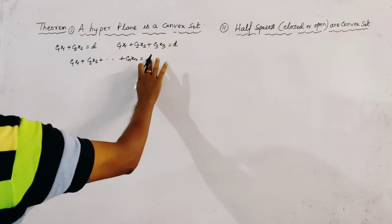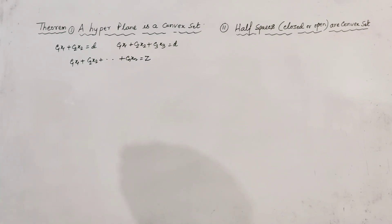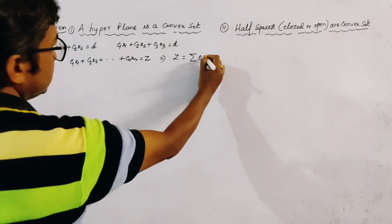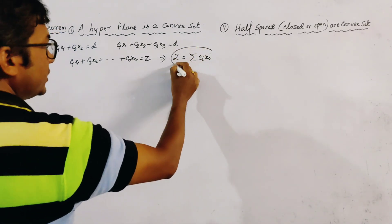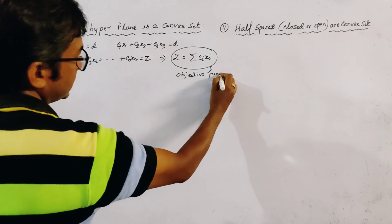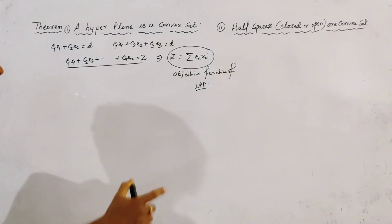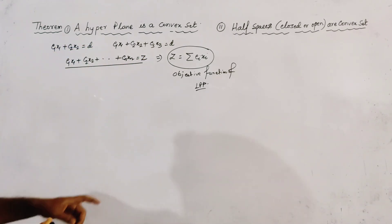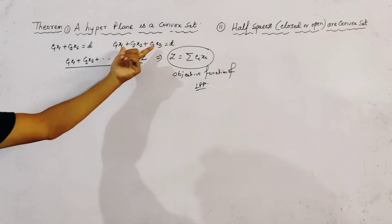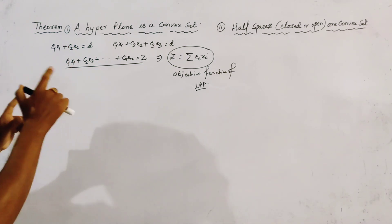If we put z in place of d, z is also a variable, and this becomes z = Σci·xi, which is nothing but the objective function. Now, if we put different values of z, we get different equations of this type — that is, of the type of a plane. This equation is said to be a hyperplane.